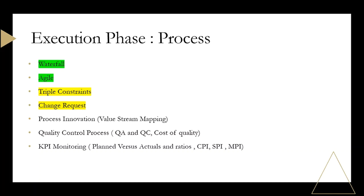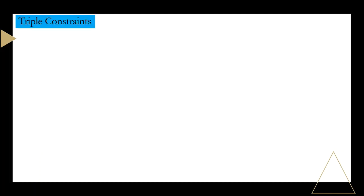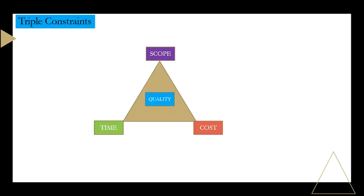So friends, what is triple constraint? Basically in project management, these are the things which as a project manager you always have to manage. In your project, everything is happening around these three points. First is scope, second is time, and third is cost.